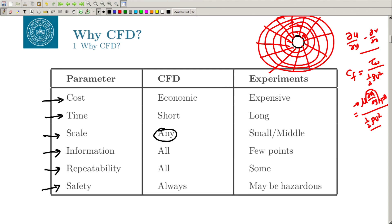Safety is another big concern. When performing an experiment, you have to be very careful about safety issues because it can sometimes be very hazardous. You do not have those issues in CFD because it is always safe — it is happening on your computer.